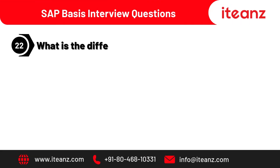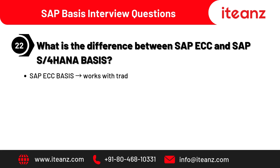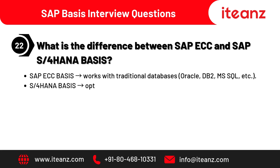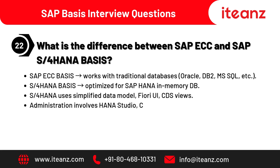What is the difference between SAP ECC and S/4 HANA Basis? SAP ECC Basis works with traditional databases such as Oracle, DB2, MSSQL, etc. S/4 HANA Basis is optimized for SAP HANA in-memory DB. S/4 HANA uses a simplified data model, Fiori UI, and CDS views. Administration involves HANA Studio, cockpit, and HANA-specific tuning.